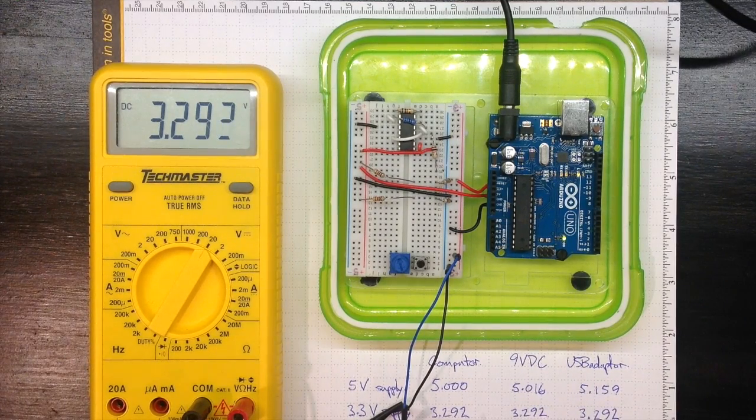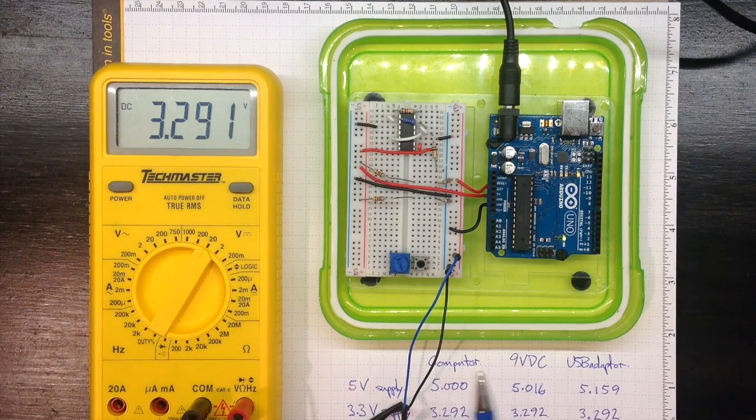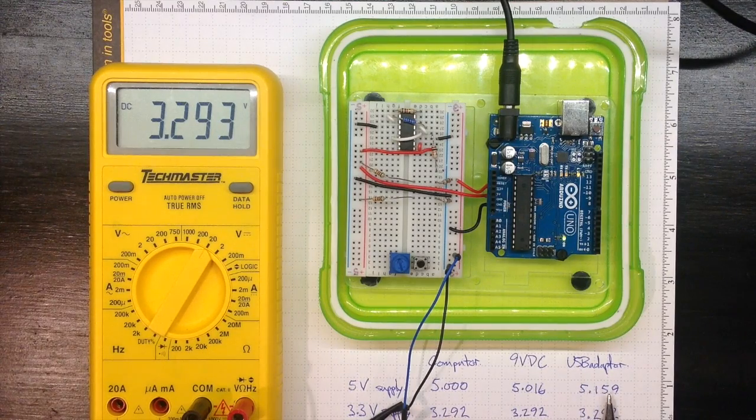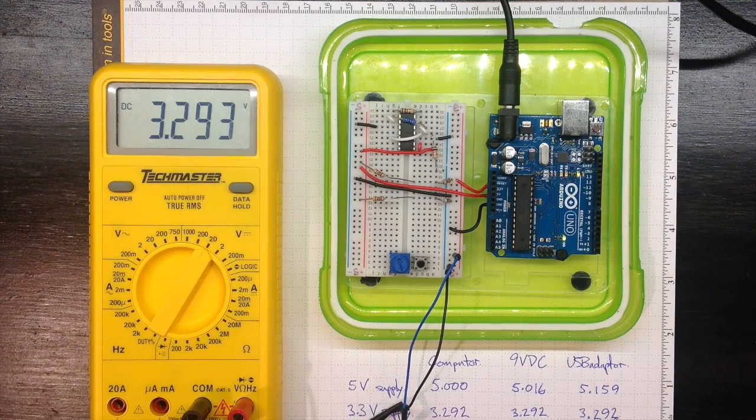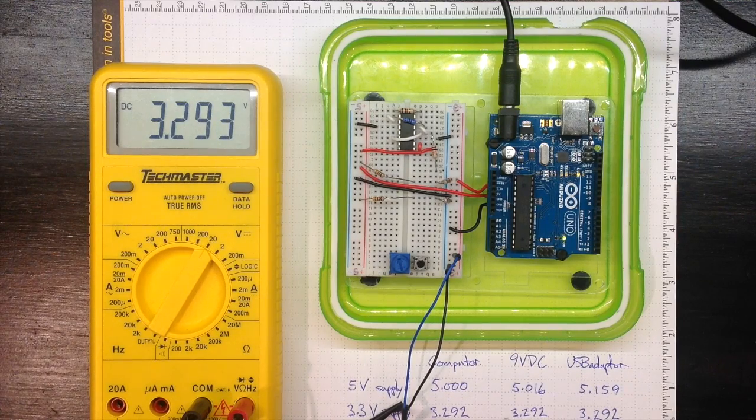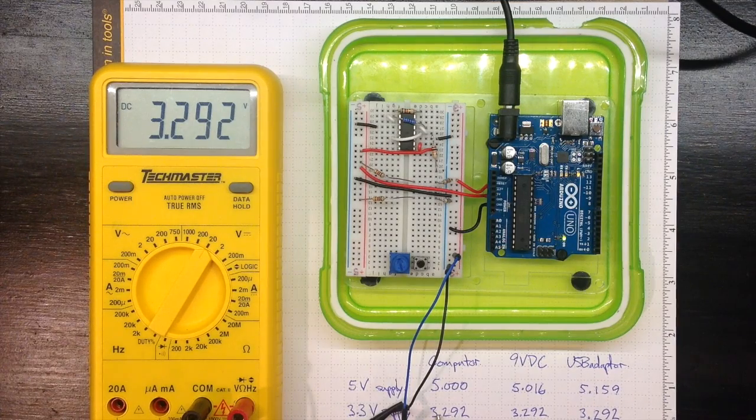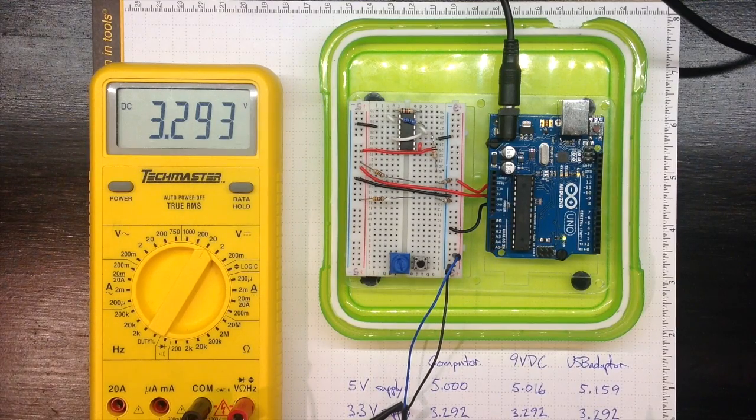So let's have a look at these numbers. The 5 volt supply varied depending on what supply source we used for our 5 volts. The 3.3 volt supply that was regulated on board stayed constant. So if we really want to be sure of what voltage we're working with, the 3.3 volt voltage is probably the more accurate one to use.